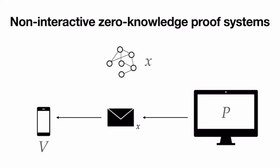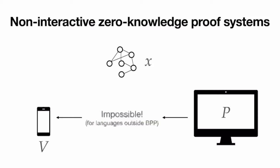Now I want to talk about non-interactive zero-knowledge proof systems, which are the real focus of the paper. In the previous protocol there was back-and-forth between verifier and prover. Sometimes communication is expensive and we want the prover to send just a single message. Without zero-knowledge this is fine for NP — the prover just sends the coloring — but doing it in a zero-knowledge fashion is impossible for languages outside BPP. For three-coloring, it's impossible to have a one-message protocol.